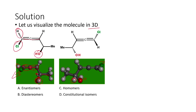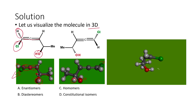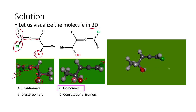When we look at this, the two compounds appear different, but after viewing the three-dimensional rotation of this molecule, we find that these two compounds are not two different compounds — they are homomers, one and the same compound.